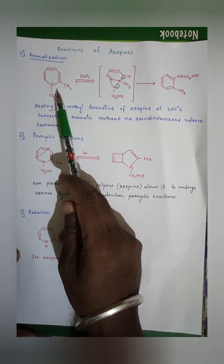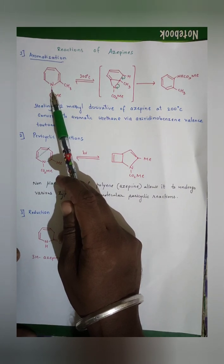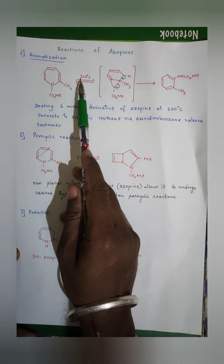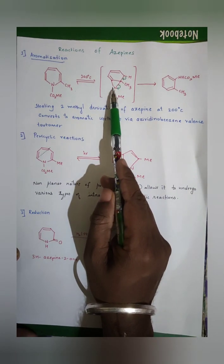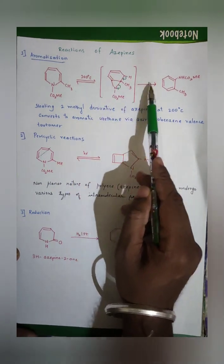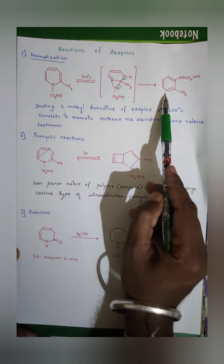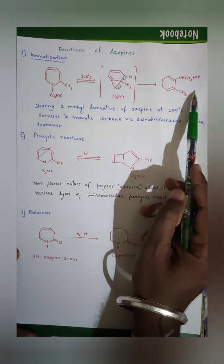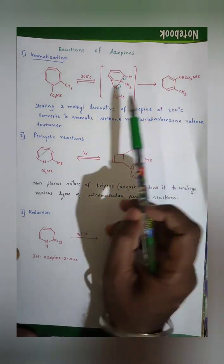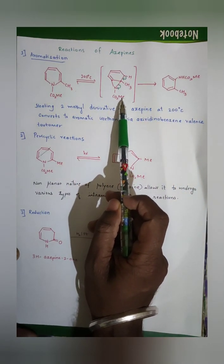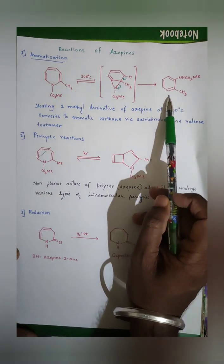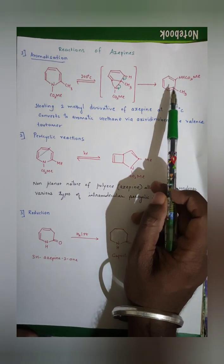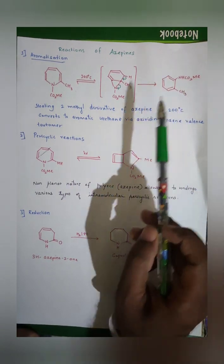Since a 7-membered ring is difficult to make aromatic, we convert it to a 6-membered ring. On heating, rearrangement takes place via an intermediate to form a molecule known as azirinobenzene. The urethane molecule formed is aromatic in nature, so azepines can undergo aromatic reactions through this pathway.